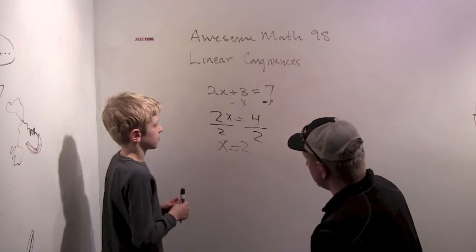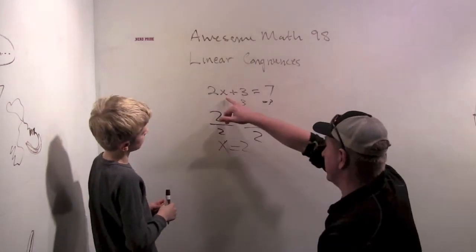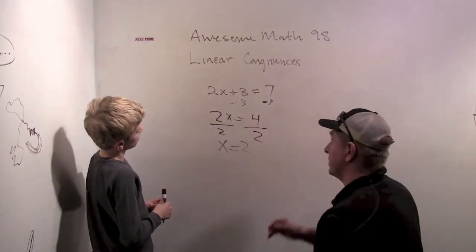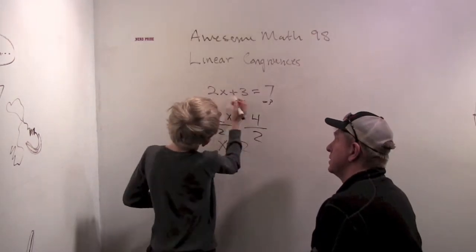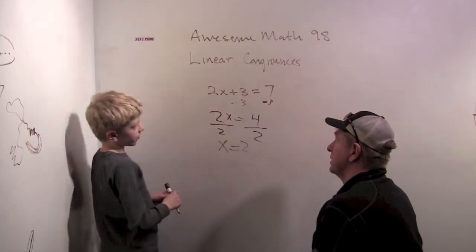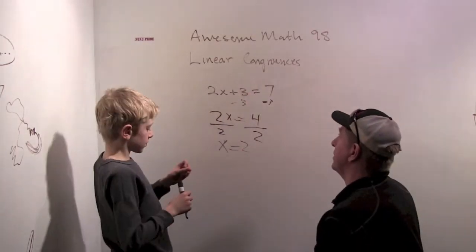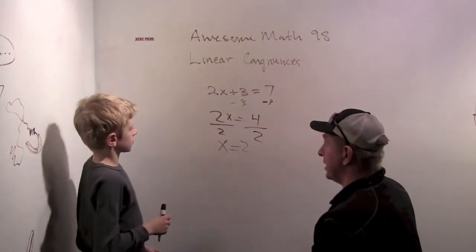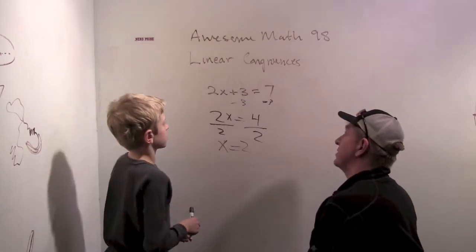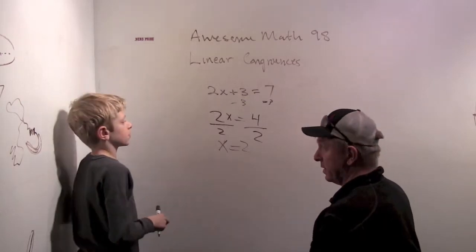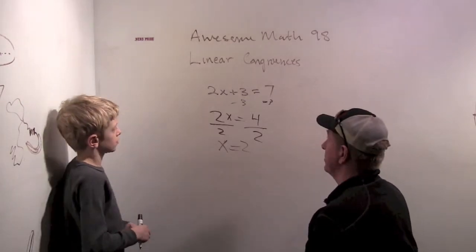Very good. And does that make sense? When we plug in x equals 2, do we get 7? We get 4 plus 3 is 7. Good job. Now we're going to do equations like this, but using modular arithmetic.